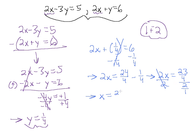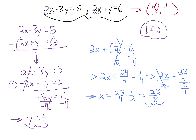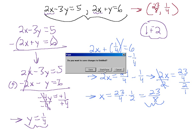So x equals 23 over 4 divided by 2 over 1. Since we're dividing by a rational number, we flip the second and multiply, giving us 1 over 2, which gives x equals 23 over 8. So y equals 1 fourth and x equals 23 over 8. The solution point for this system of equations is (23/8, 1/4). We can check this by plugging in the values for x and y into both equations and verifying they equal out. We're solving systems of linear equations by elimination using subtraction, recognizing when coefficients of one variable are identical in both equations.